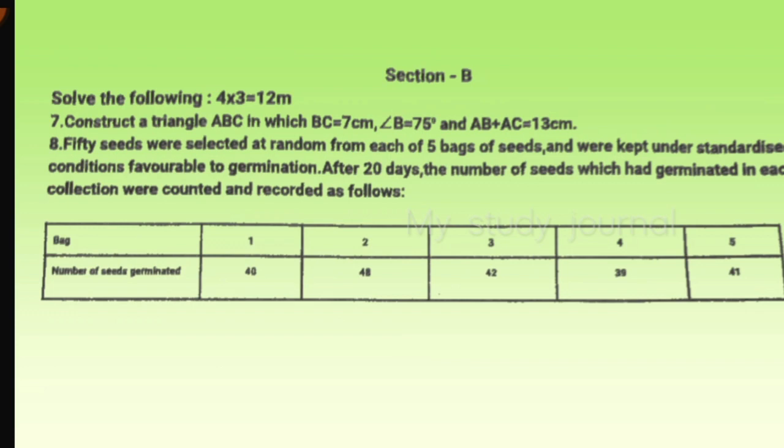With this we completed Section A and moving to Section B. Each question contains three marks and we have four questions. Seventh question: construct a triangle ABC in which BC is 7 centimeters, angle B is 75 degrees, and AB plus AC is equal to 13 centimeters. They gave specific numbers and angles, so we have to use those particular alphabets only to represent. I did a mistake - instead of B I wrote what I wanted like X, Y. I constructed a triangle XYZ and I lost marks.